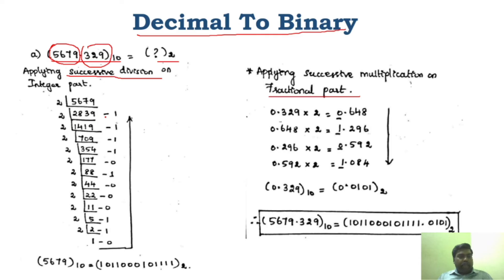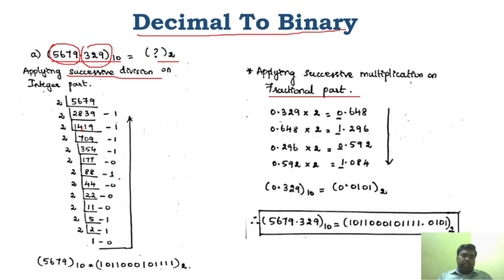For the integer part, divide 5679 by 2 repeatedly, recording each remainder: the remainders come out as 1, 1, 0, 0, 1, 1, 1, 0, 1 and so on. Continue dividing until the quotient reaches 0. Writing the remainders from bottom to top gives the binary integer part: 1011000101.